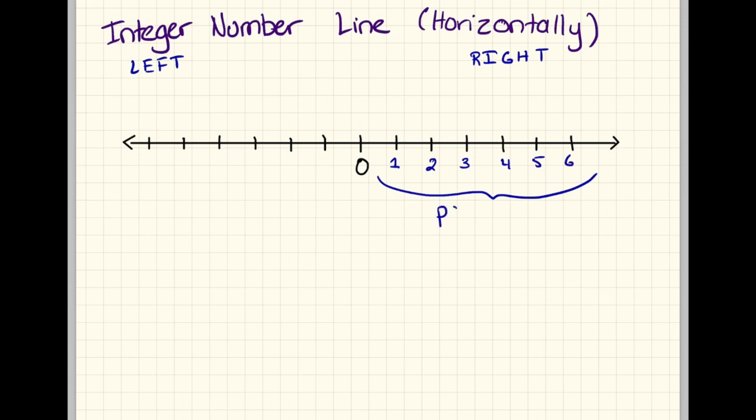So these are the positive integers. And some characteristics, just to give you an idea, is that they are greater than 0, but also they are to the right. In this case, because it's horizontally, we say they are to the right of 0.